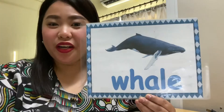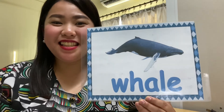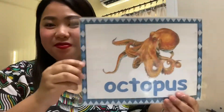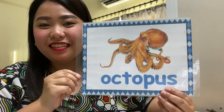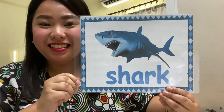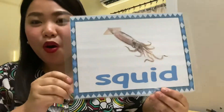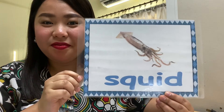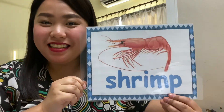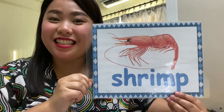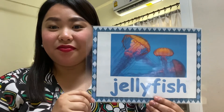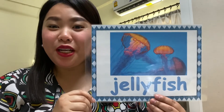Now let's take a review about the different water animals that we learned. What water animal is it? Very good — it's a whale. What water animal is it? Great — it's an octopus. What water animal is it? Wow — it's a shark. What water animal is it? Yes, you're correct — it's a squid. What water animal is it? Excellent — it's a shrimp. What water animals are they? Very good — they are jellyfish.